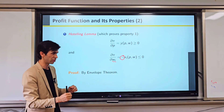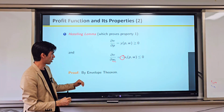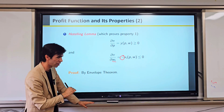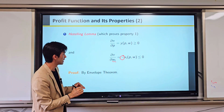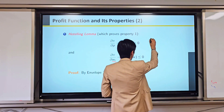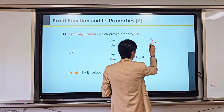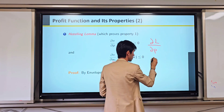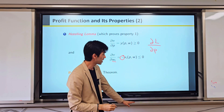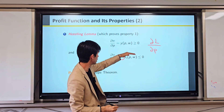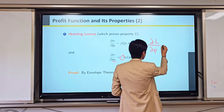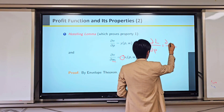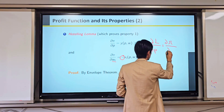There is a very detailed proof of the envelope theorem, but simply put, when we take the partial derivative of the Lagrangian with respect to price, it is equal to the partial derivative of profit with respect to price.